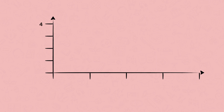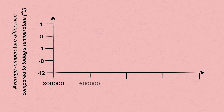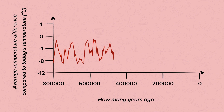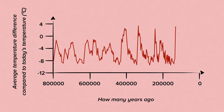Let's look at some data. This graph has on its y-axis the average temperature difference compared to today's temperature in degrees C, and along the x-axis, how many years ago. So zero on the far right is today, and then it's going back 800,000 years. This line shows the average temperature in comparison to today. You can see that over history, it has gone down and up. At some points it has been colder than today, at other points warmer. The Earth constantly changes its temperature naturally.